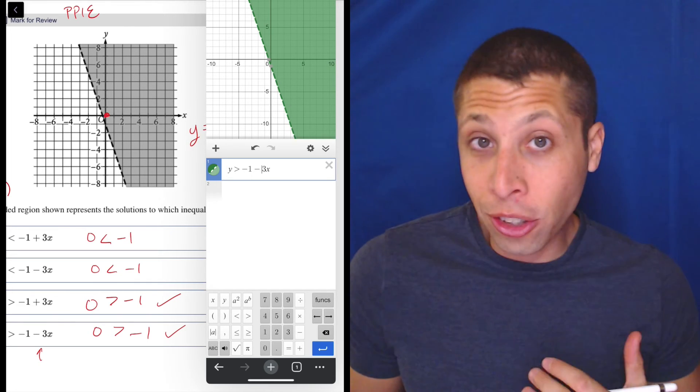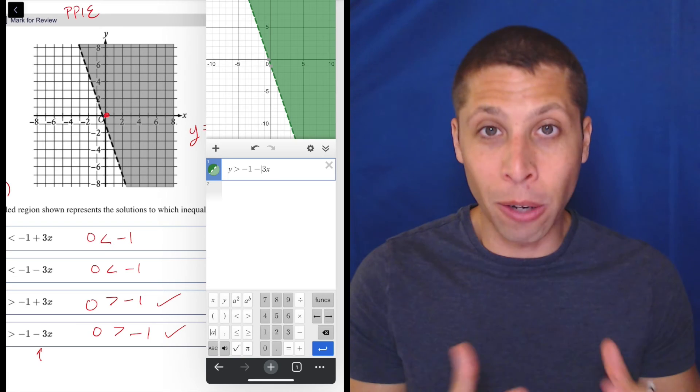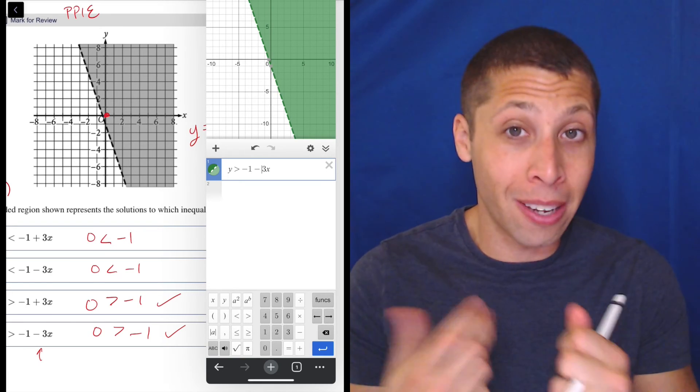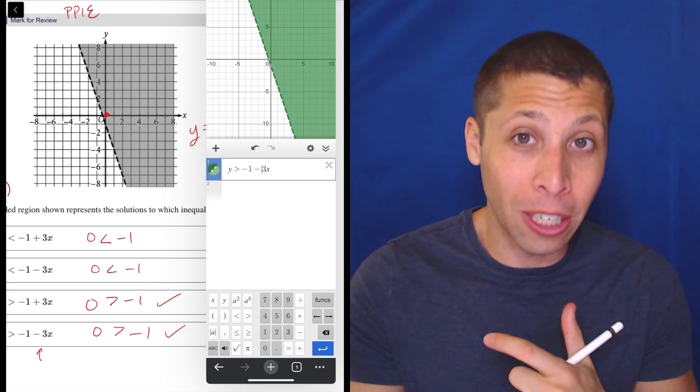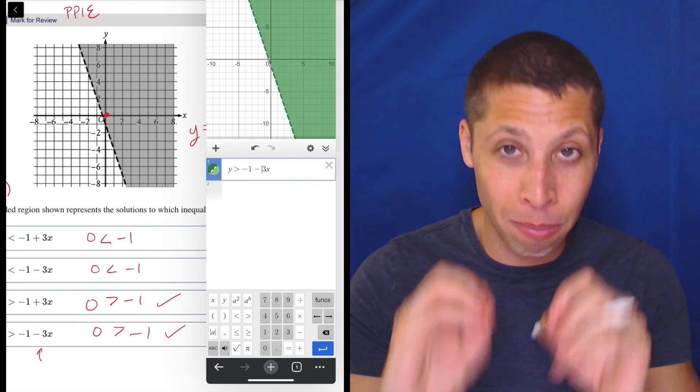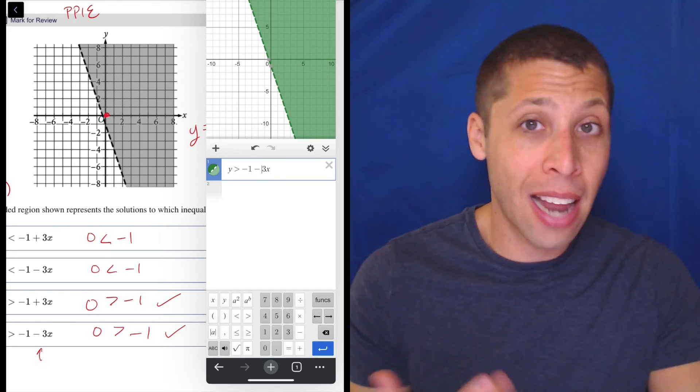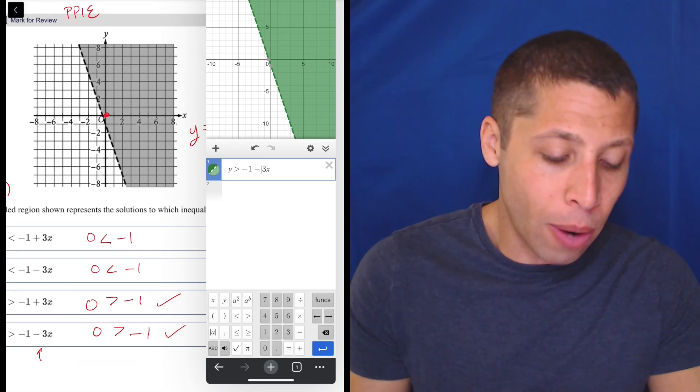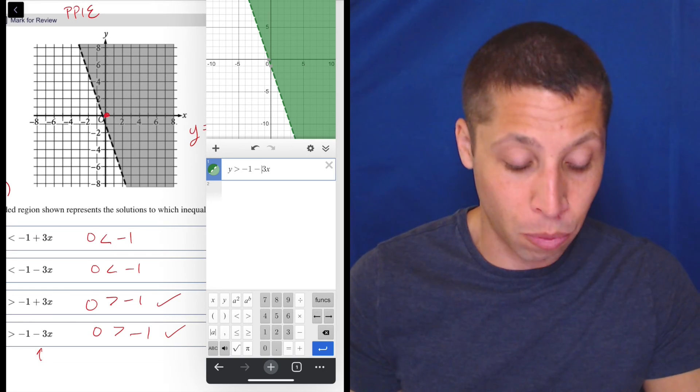On a harder question, the SAT might give you two very similar slopes that kind of present with the same graph or similar looking graphs. That way you got to actually dive in and check the points. That's not happening here, but I don't know that Desmos is the most efficient way to do this.